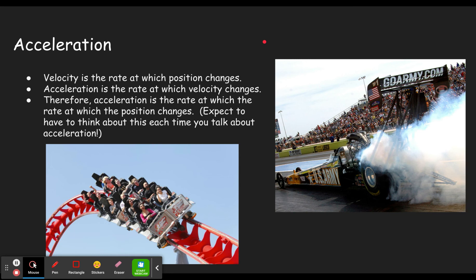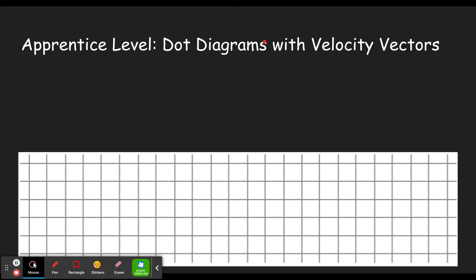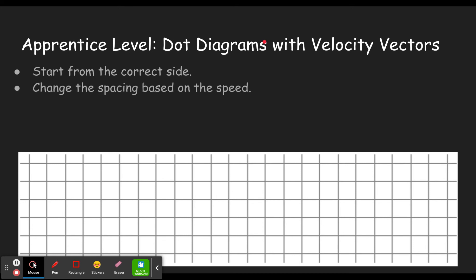That's our idea when we get to acceleration, which is our second section. The first section is the apprentice level — what I always call the apprentice level — called dot diagrams with velocity vectors. First of all, make sure you start from the correct side. If it says the object is moving left, start from the right and move towards the left. If it says it's going right, start at the left and move towards the right. Then make sure you're changing the spacing of your dots based on the speed — the faster it's going the more space, the slower it's going the less space.